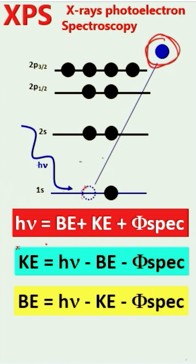This is a very famous equation: the photon energy hν is equivalent to the binding energy plus kinetic energy of the photoelectron plus Φspec, which is the work function of the spectrometer, a constant value.